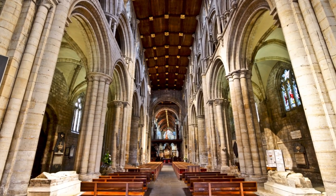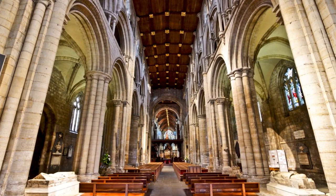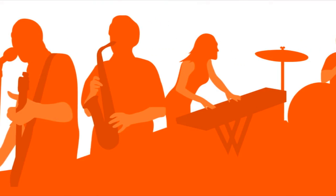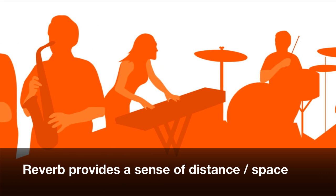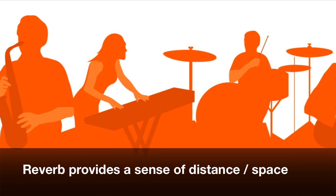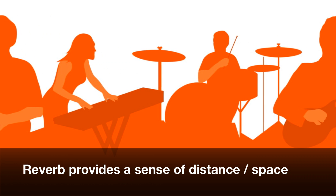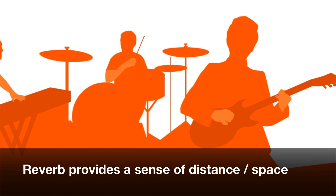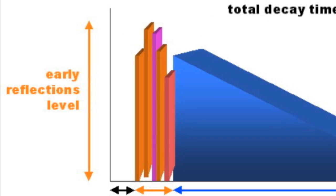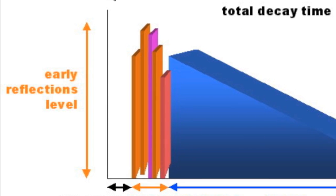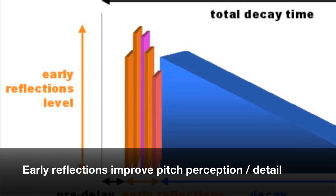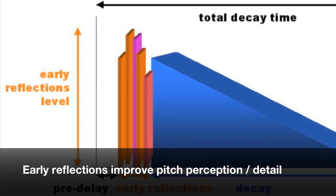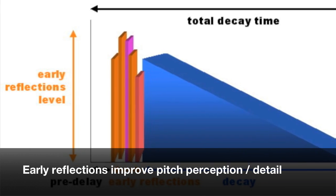Reverb also has several sonic benefits. It can provide instruments or groups of instruments with a sense of distance, creating the illusion that sources are further away from the listener in the sound field. Dense early reflections improve pitch perception in detail because the listener's ears integrate these reflections into the original sound.